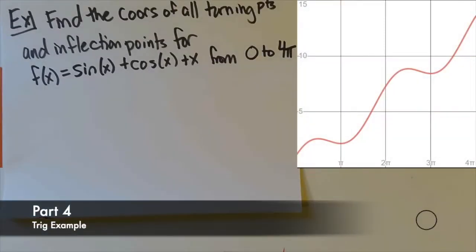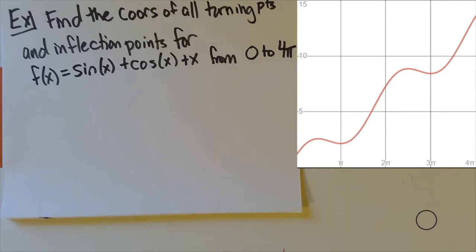Hello again class. We have here one more example of all of this stuff with increasing, decreasing, concave up, concave down, turning points and inflection points. Here I've given you a graph of the function sine of x plus cosine of x plus x, between zero and four pi. We've gone up to four pi instead of two pi, so I'll have to keep that in mind. We want to know the coordinates, both x and y, of all the turning points and all the inflection points for this graph.